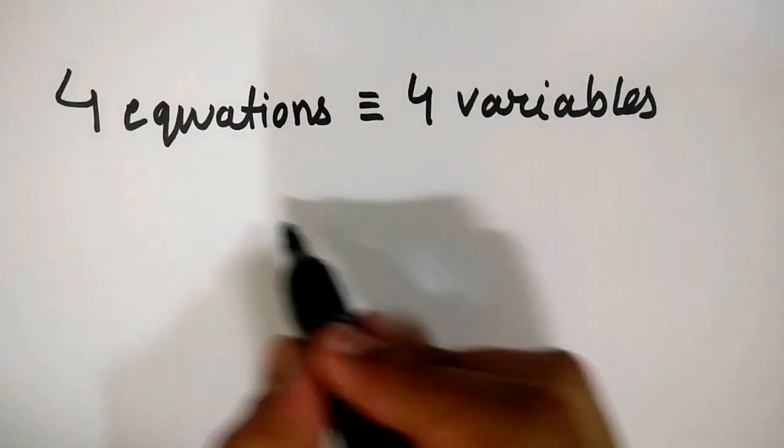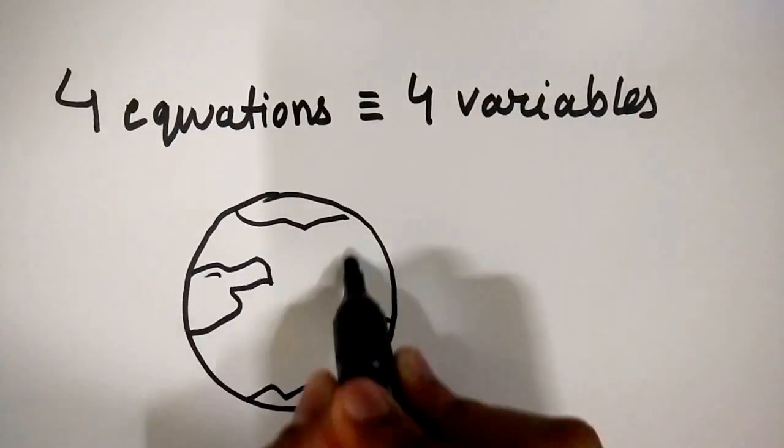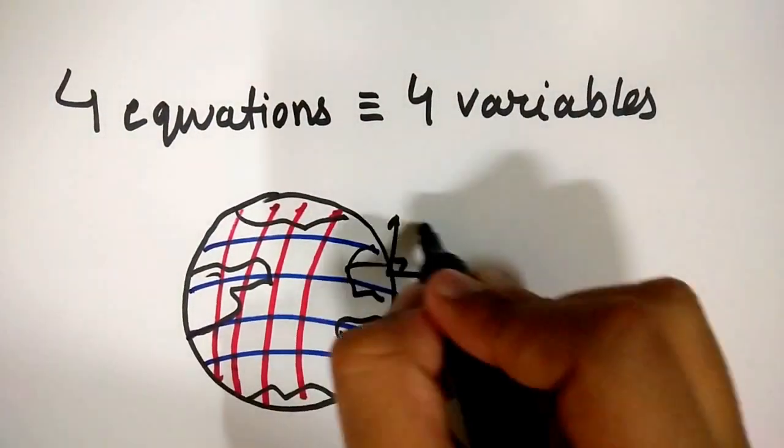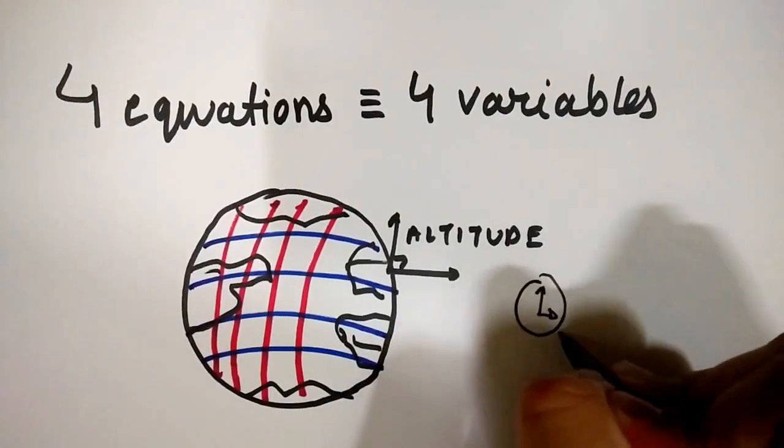Why 4? It's simple algebra. To solve 4 equations, we need values of 4 variables. In the case of GPS, those 4 variables are the latitude, longitude, the altitude and time.